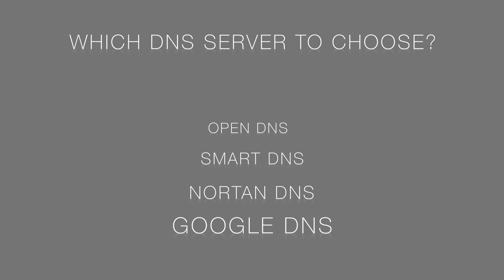For this tutorial we are going to use Google DNS, but you are free to choose whatever you want. The steps to change the DNS server are pretty simple for all operating systems — all you have to do is go to the network settings and add two IPs in the DNS field. Let's see how to do this on popular operating systems.